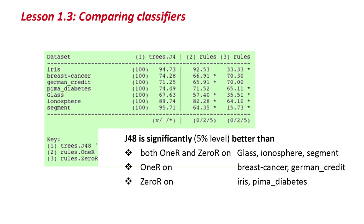So you can see from the table of figures and the stars where the significant results are. Now, what if we wanted to compare 1R? If we wanted to know whether 1R was significantly better than 0R, this does not tell us on this slide, because on this slide we're comparing everything with J48.